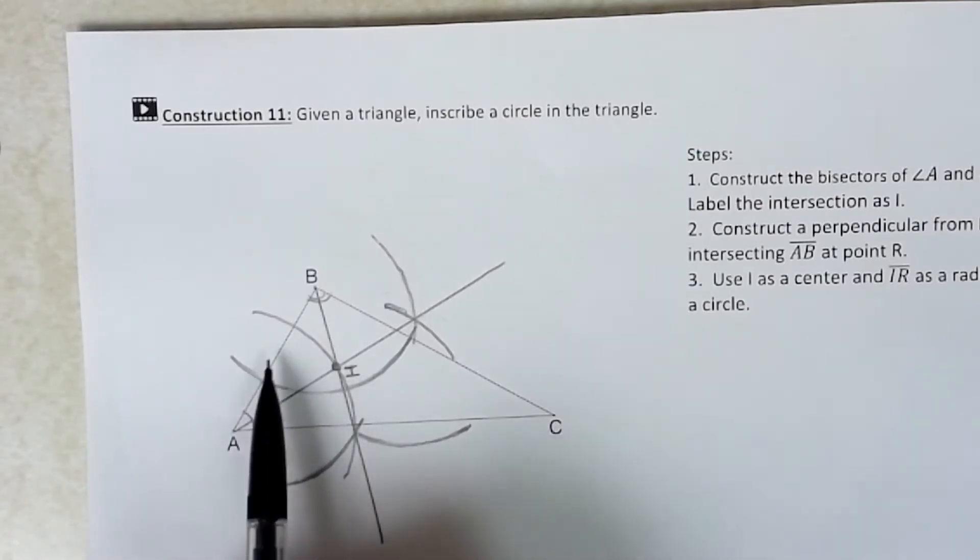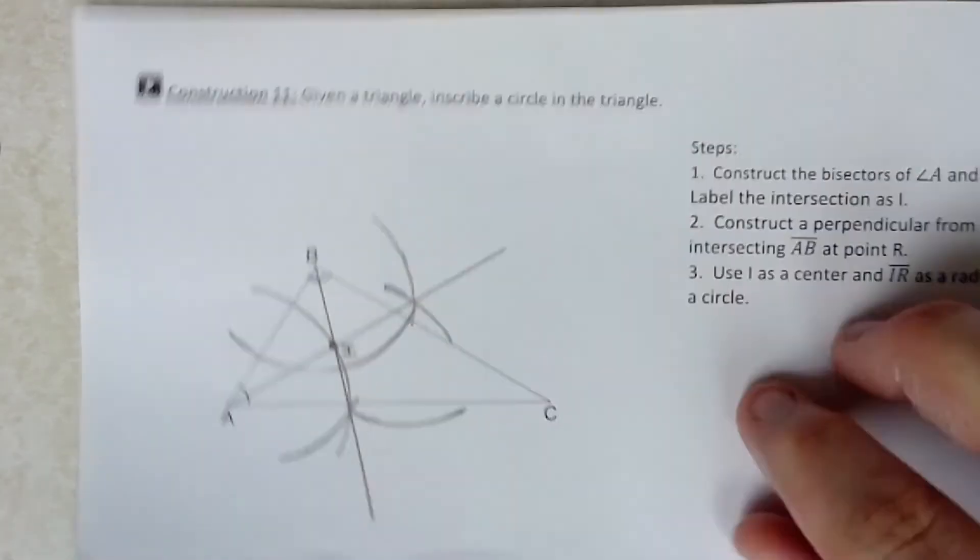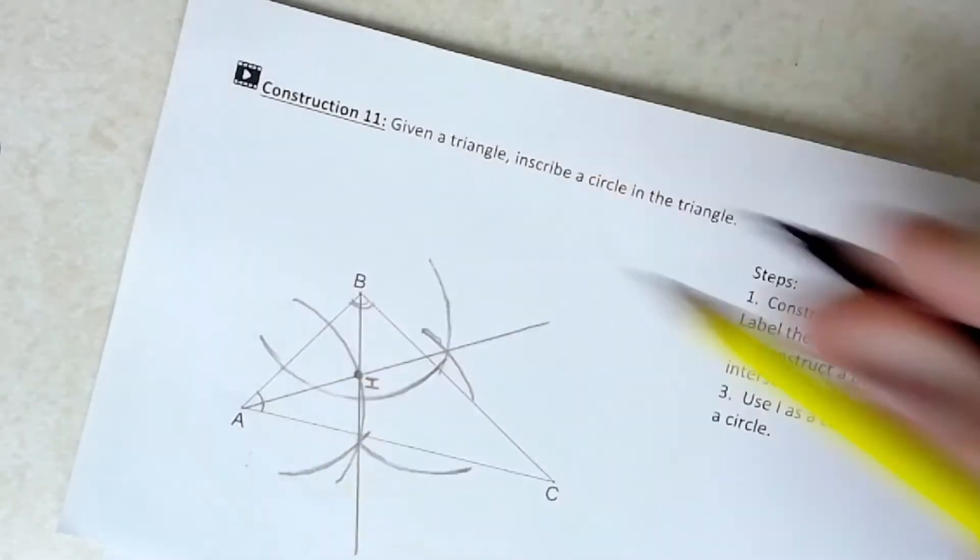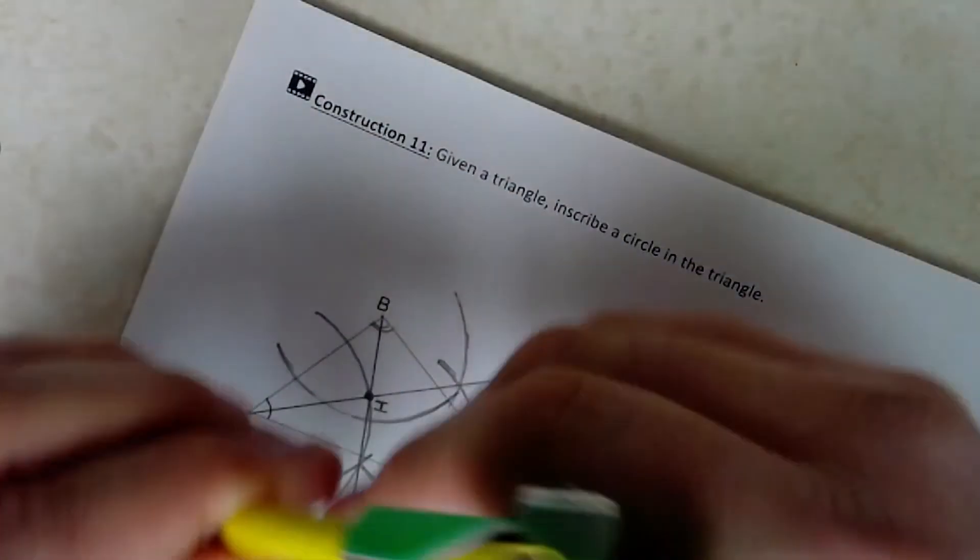So we're going to go ahead and use the construction where if you have a point outside of a line or off the line, we can go ahead and find the perpendicular line to that. So we're going to use essentially what's from construction six and we're going to go ahead and make that perpendicular line. I'm going to go ahead and use AB to go ahead and create that perpendicular line.